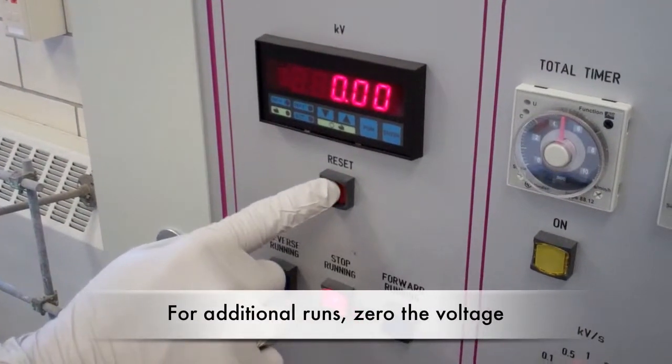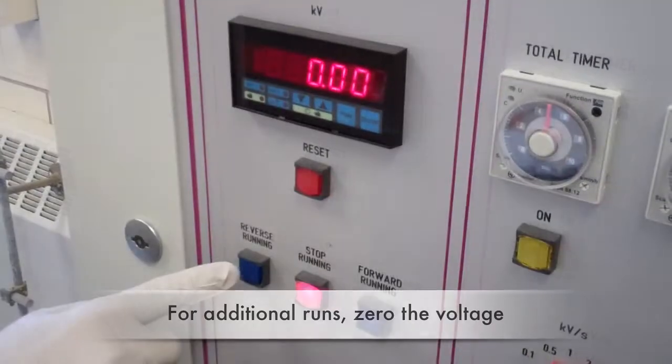To prepare for additional runs, zero the voltage by pressing the digital reset button and the reverse running button.